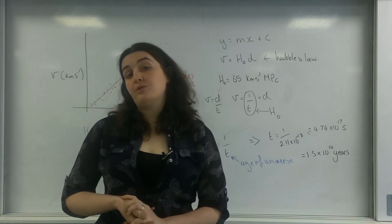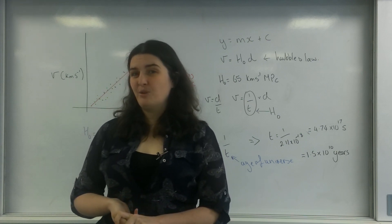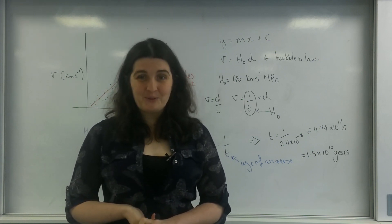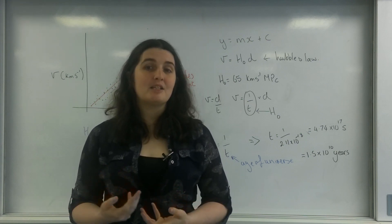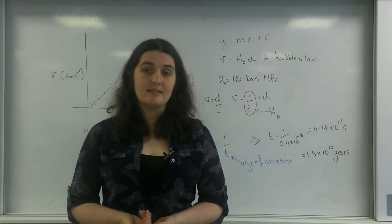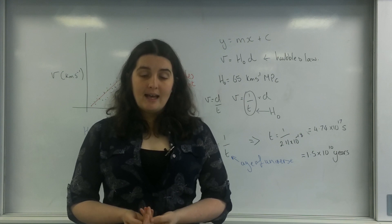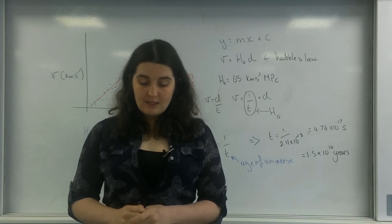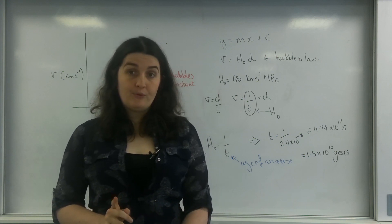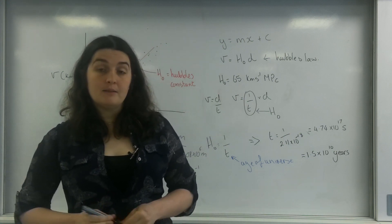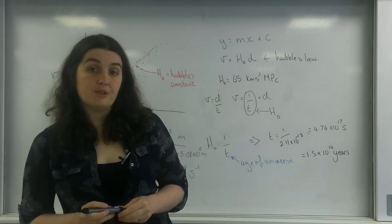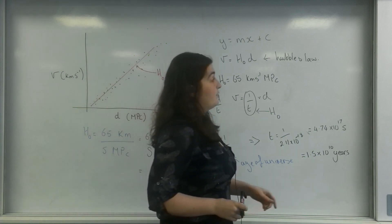So Hubble's constant is not a constant at all — it's something that continually changes. And one thing it's actually quite important for is something known as the critical density of the universe.